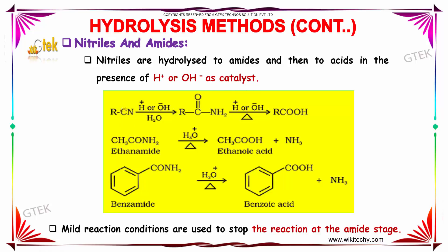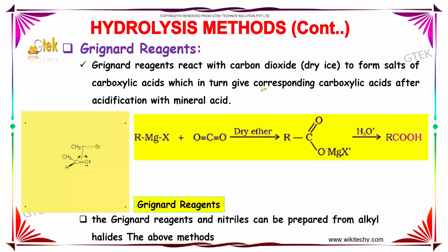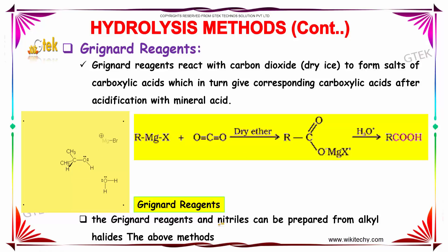In this reaction, RCN — which is a nitrile — when made to undergo hydrolysis, produces an amide, that is RC(=O)NH2. When it is further treated in the presence of H+ or OH-, we obtain carboxylic acids. Similar reactions take place for ethanamide and benzamide to produce ethanoic acid and benzoic acid, with ammonia as the byproduct. Mild reaction conditions are used to stop the reaction at the amide stage. Grignard reagents react with carbon dioxide to form salts of carboxylic acids, which in turn give corresponding carboxylic acids after acidification with mineral acid. The Grignard reagents and nitriles can both be prepared from alkyl halides.